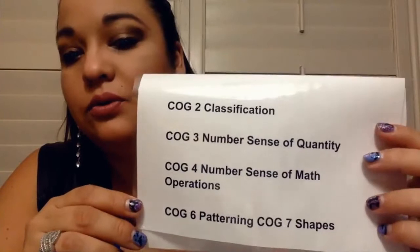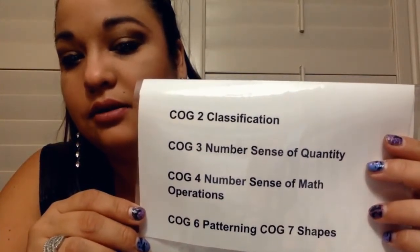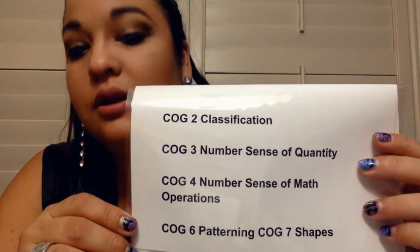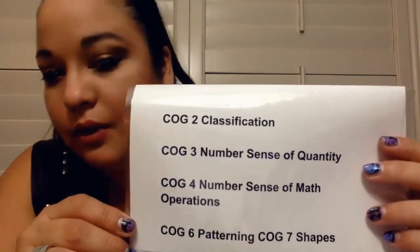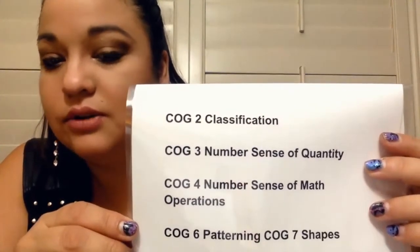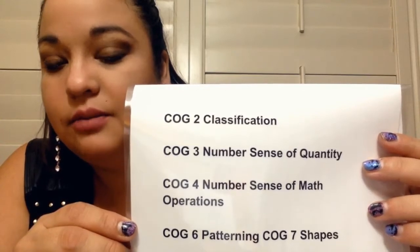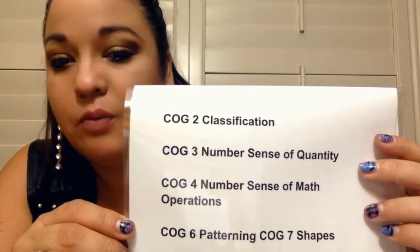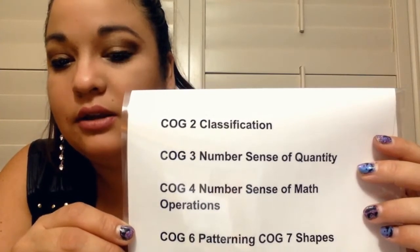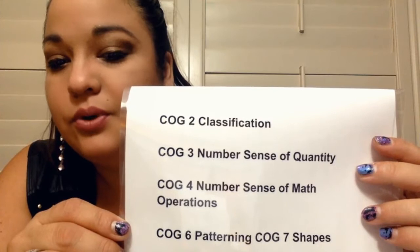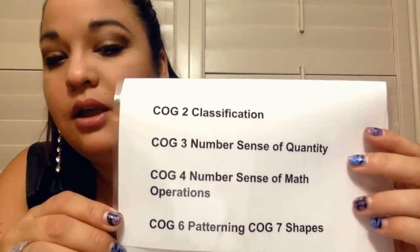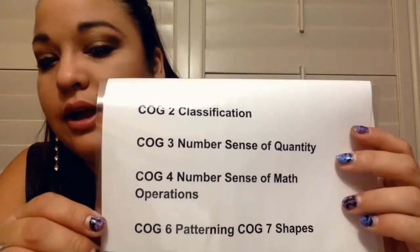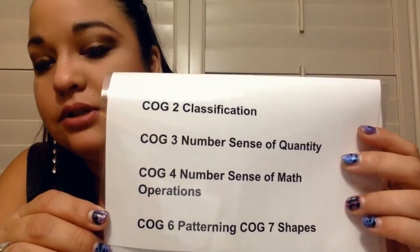The next four goals for the DRDP modified version would be cognition — this is how we think, how we problem solve, mostly math concepts for our preschool students. We have cognition two which is classification. Is your child able to sort? Are they able to sort by color, by type of toy? For example, grab all your toys and sort them by superheroes, animals, and Paw Patrol. You can also sort by what objects in your home have alphabet letters or numbers.